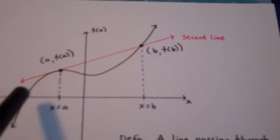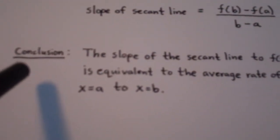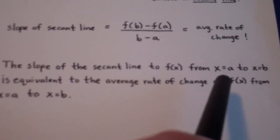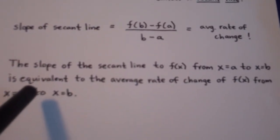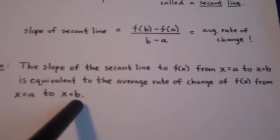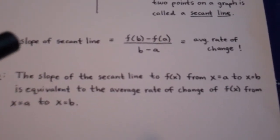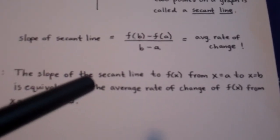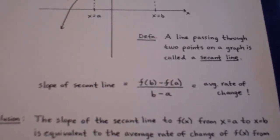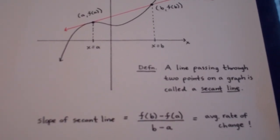The slope of the secant line to a function f of x from x equals a to x equals b is equivalent to the average rate of change of that function from x equals a to x equals b. I forgot to bring the textbook home, so I don't have a homework assignment ready, but I will have an assignment ready on Monday that will give you some practice with average rate of change, secant lines, and slope.